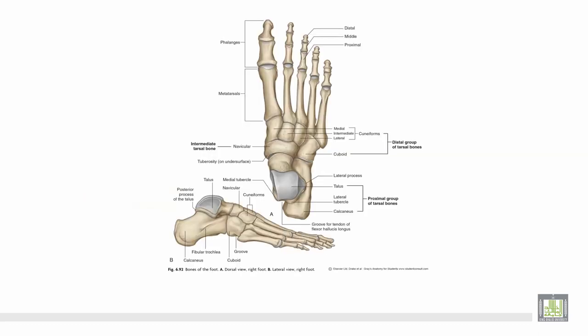This is the skeleton of the foot. These are the tarsal bones — seven bones — forming the metatarsals, and these are the phalanges. This is the talus, calcaneus, navicular bone, cuboid, and the three cuneiforms.